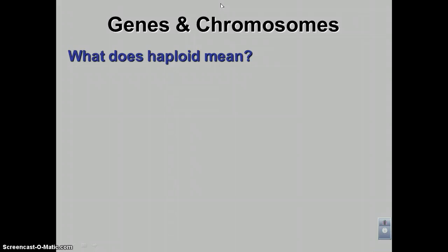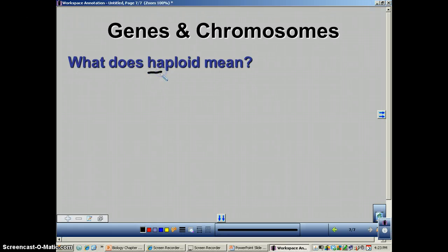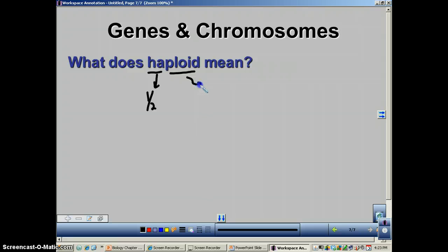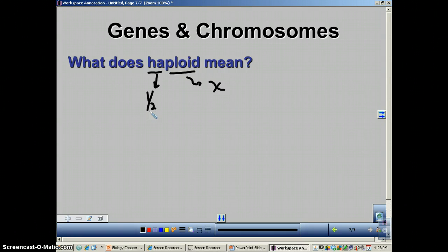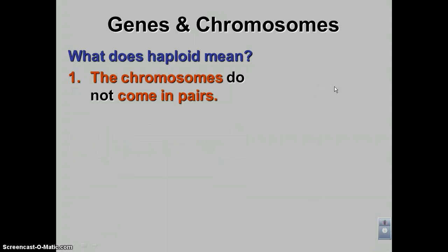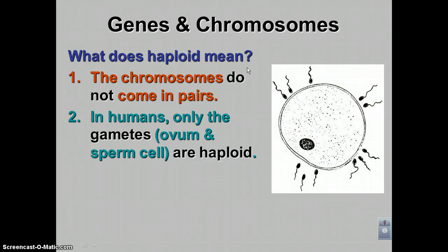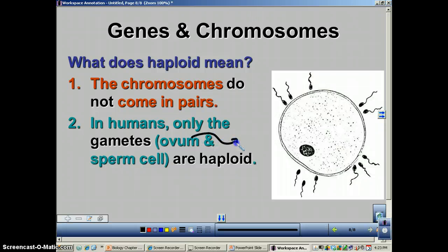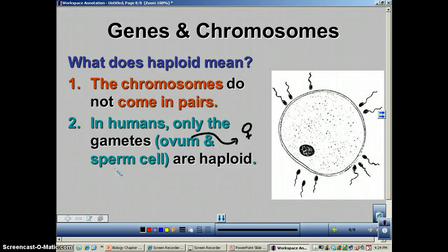What does haploid mean? It's essentially the opposite of diploid. The 'ha' refers to one half, and the 'ploid' part again refers to chromosomes. So you have half the number of chromosomes compared to a diploid cell, meaning the chromosomes do not come in pairs — you only have one of each kind. The only cells in a human being that are haploid are the gametes: the ovum and the sperm cell.